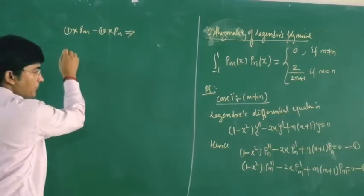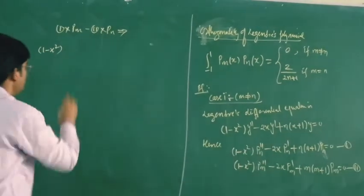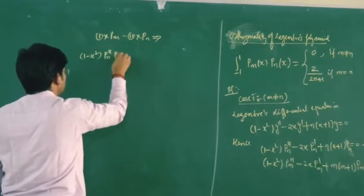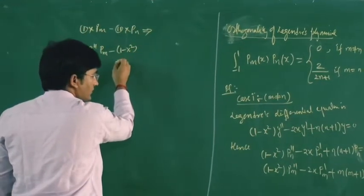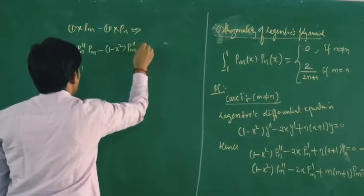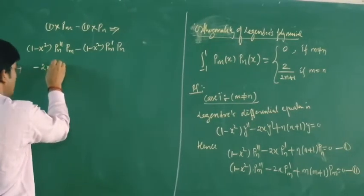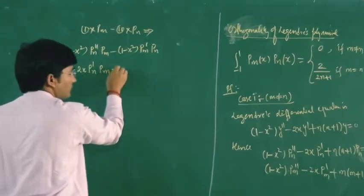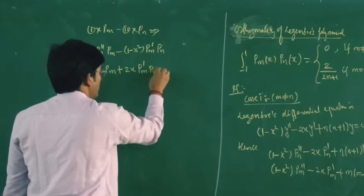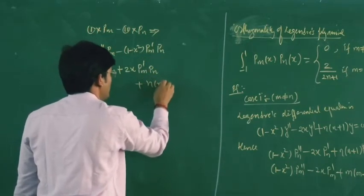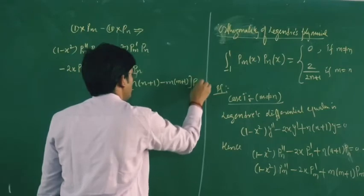After multiplying and subtracting, we have (1 - x²)(P_n''·P_m - P_m''·P_n) minus 2x(P_n'·P_m - P_m'·P_n) plus [n(n+1) - m(m+1)]·P_n·P_m = 0.